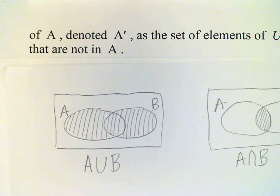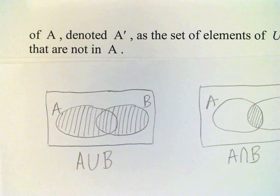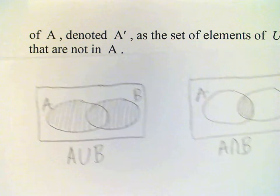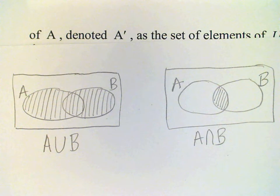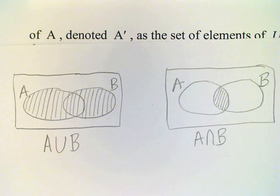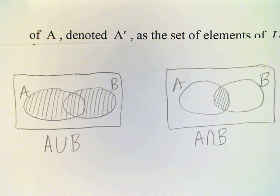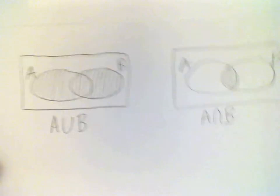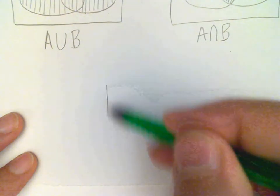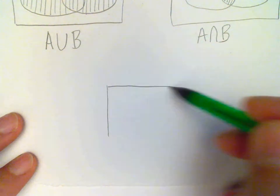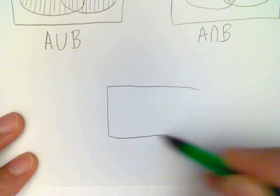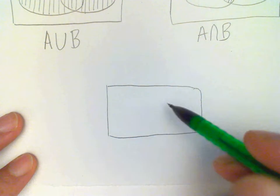Remember that a Venn diagram can be very useful in visualizing a set operation. In the previous video we looked at representations for the union and for the intersection. We can also represent the complement graphically using a Venn diagram. Of course in this case we only have one set, aside from that universal set.